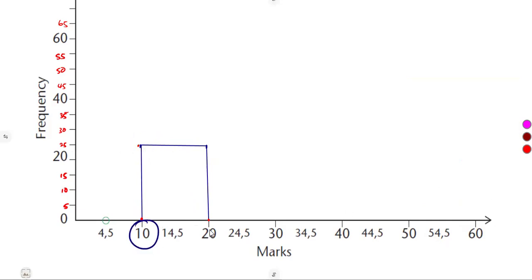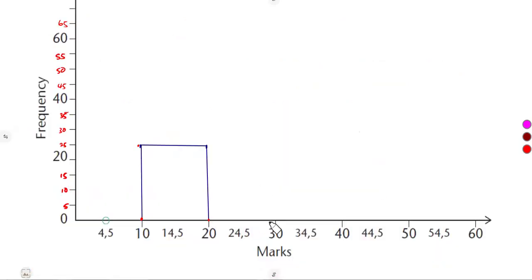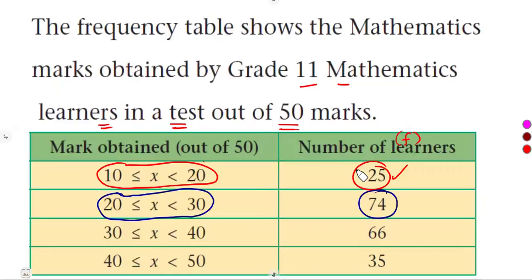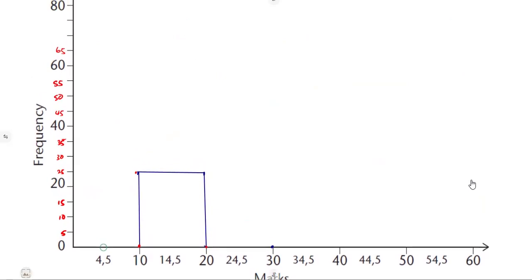Then we do the same thing from 20 to 30, which is 74. 20 to 30, this is our 30 here. Already, we've got 20, but we need 30. That's 74. 74, it's just going to be below 75.